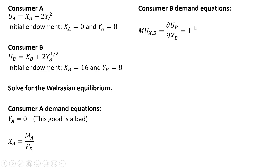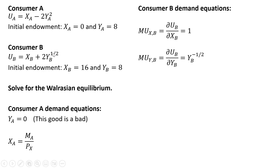Now let's get consumer B's demand equations. We're going to get the marginal utility of good X first. Taking the partial derivative of the utility function with respect to X, we get 1. Then we get the marginal utility of good Y — taking the partial derivative with respect to good Y, we end up with Y raised to the minus one-half power. The one-half on the exponent gets multiplied by the 2, so that becomes 1, and then we subtract 1 from the exponent, leaving Y raised to the minus one-half power.